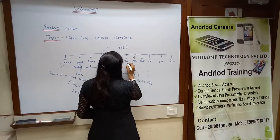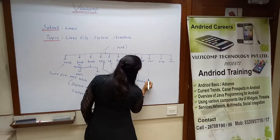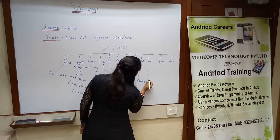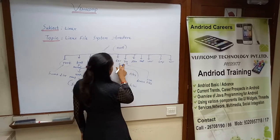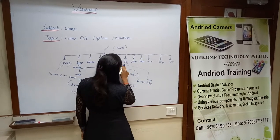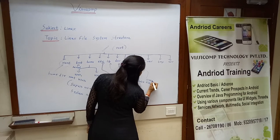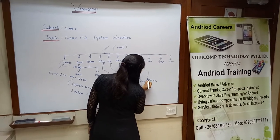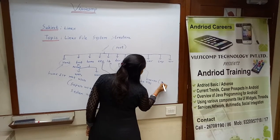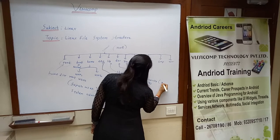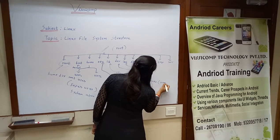Then, bin. This contains binaries. Short form is bin and full form is binaries. Binaries means program files or command files. The user commands and command files can be used from this directory.